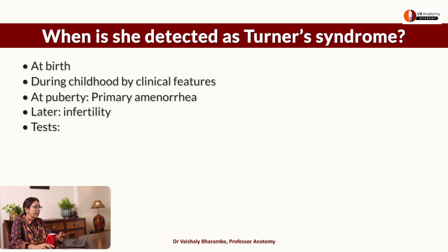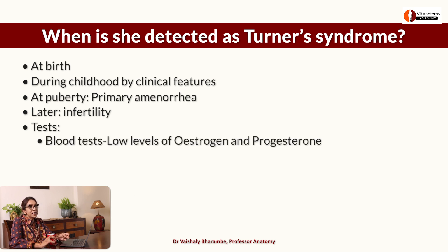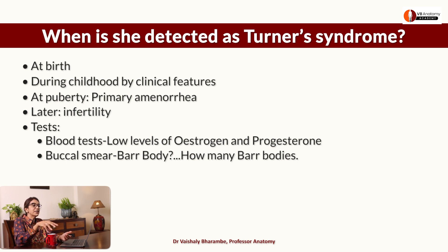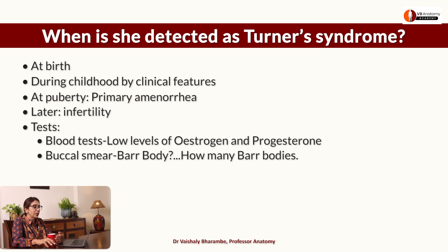What tests will you do? You will do a blood test and find lesser estrogen and progesterone levels. You can do a simple buccal smear — if she is a normal female she will show a Barr body. If she is Turner syndrome, she has only one X chromosome, which cannot be inactivated — so she will have no Barr body. Applying the formula: Nx minus 1 = 1X minus 1 = 0 Barr bodies.